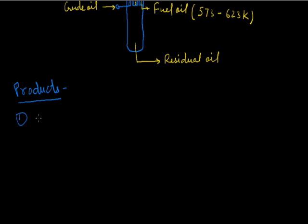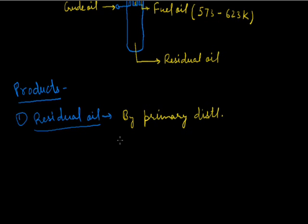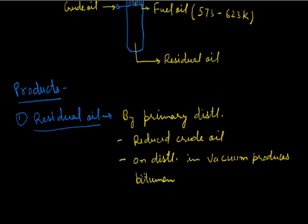The first product is residual oil. It is obtained by primary distillation of petroleum. It is also known as reduced crude oil. When it is distilled in vacuum, it produces bitumen as residue. The important uses of bitumen are in road surfacing and coating cables to provide electrical insulation.